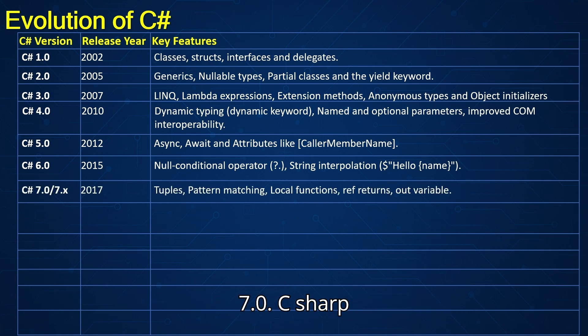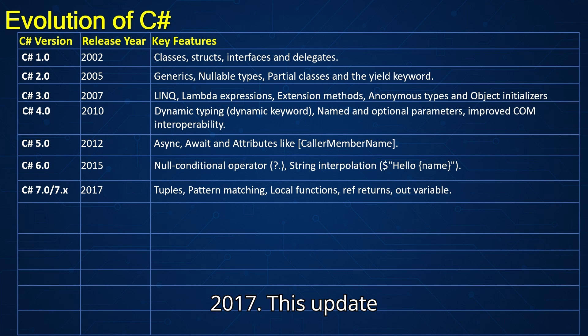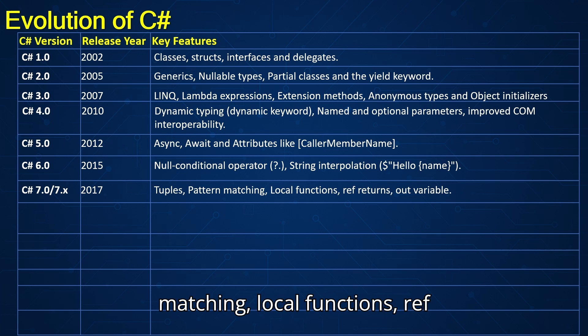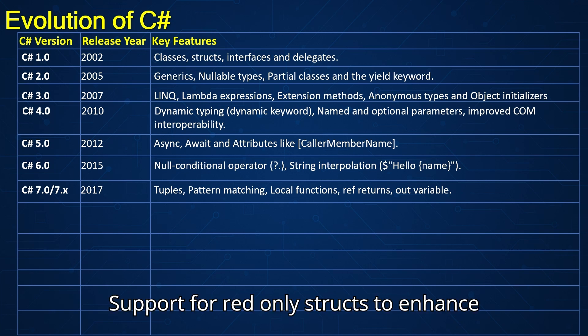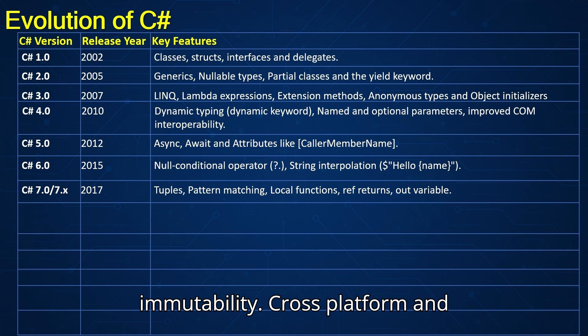C-sharp 7.0 was introduced in 2017. This update introduced tuples, pattern matching, local functions, ref returns, and out variables. Also added support for read-only structs to enhance immutability.